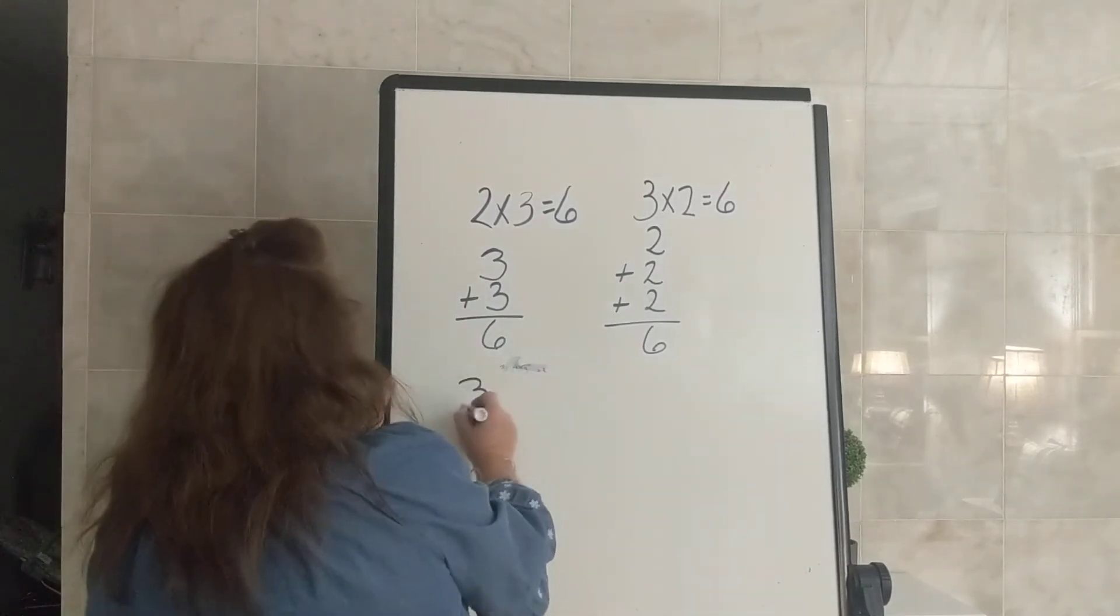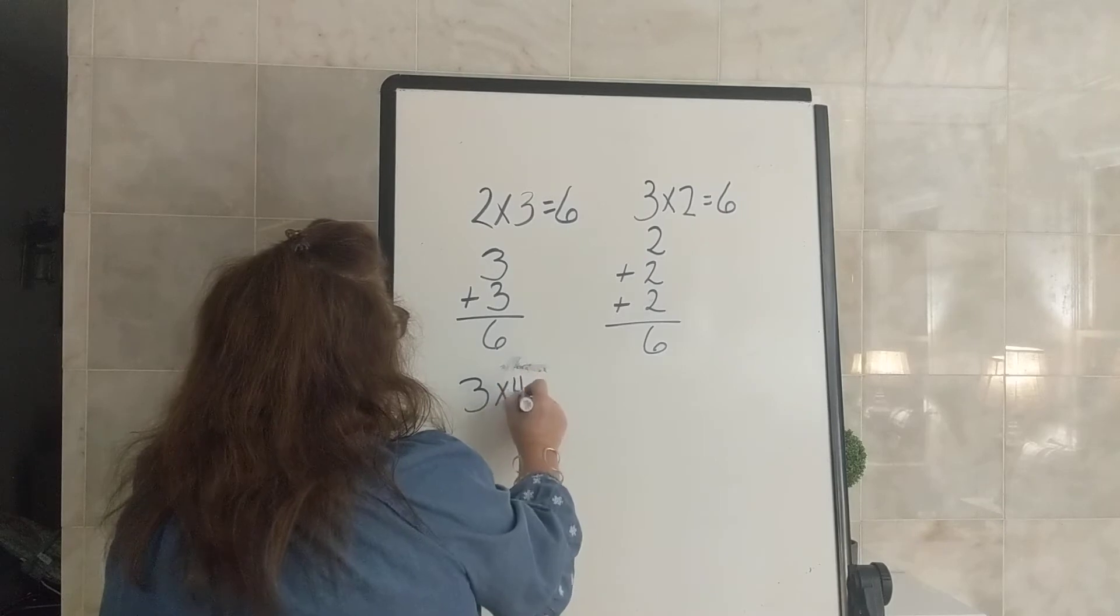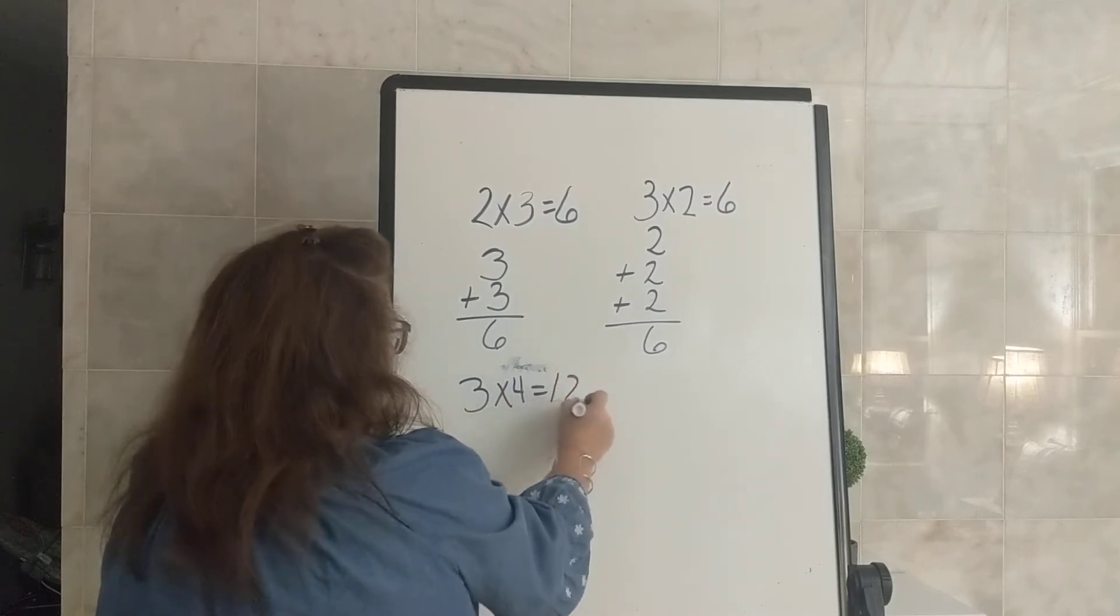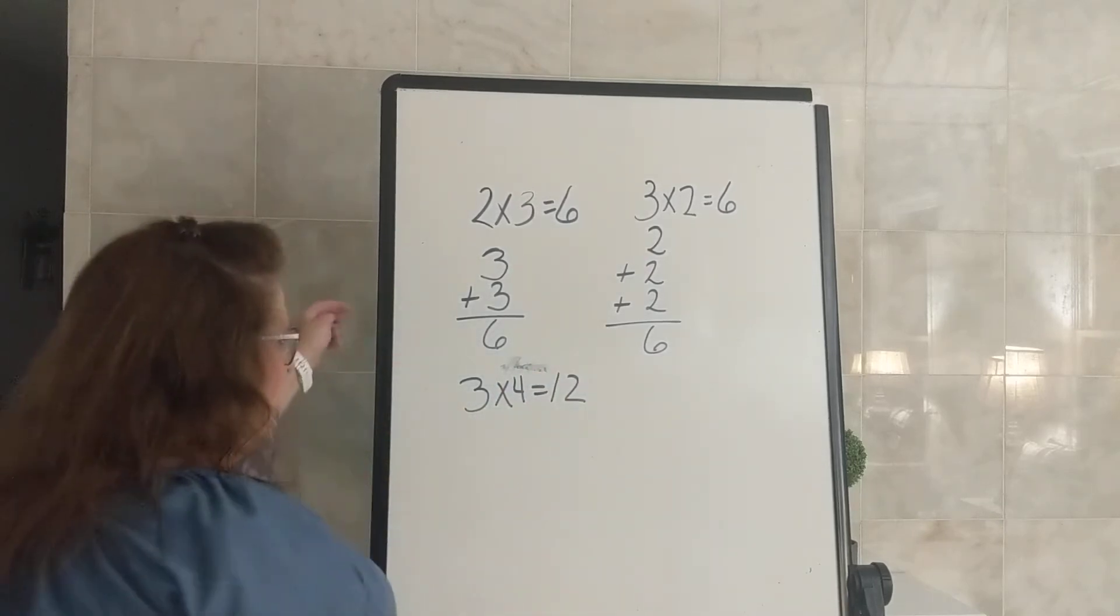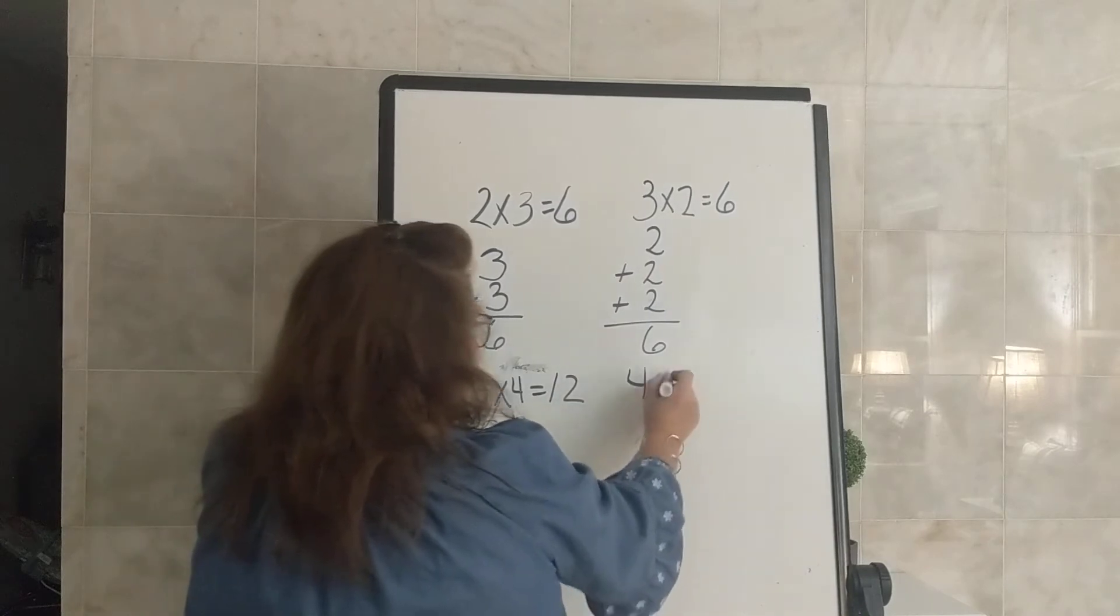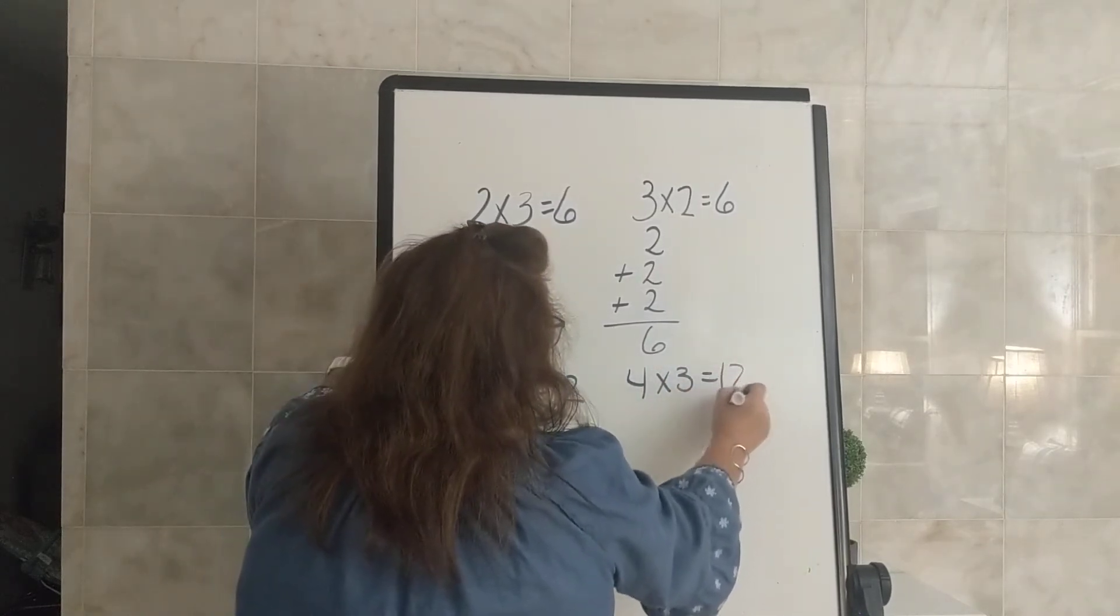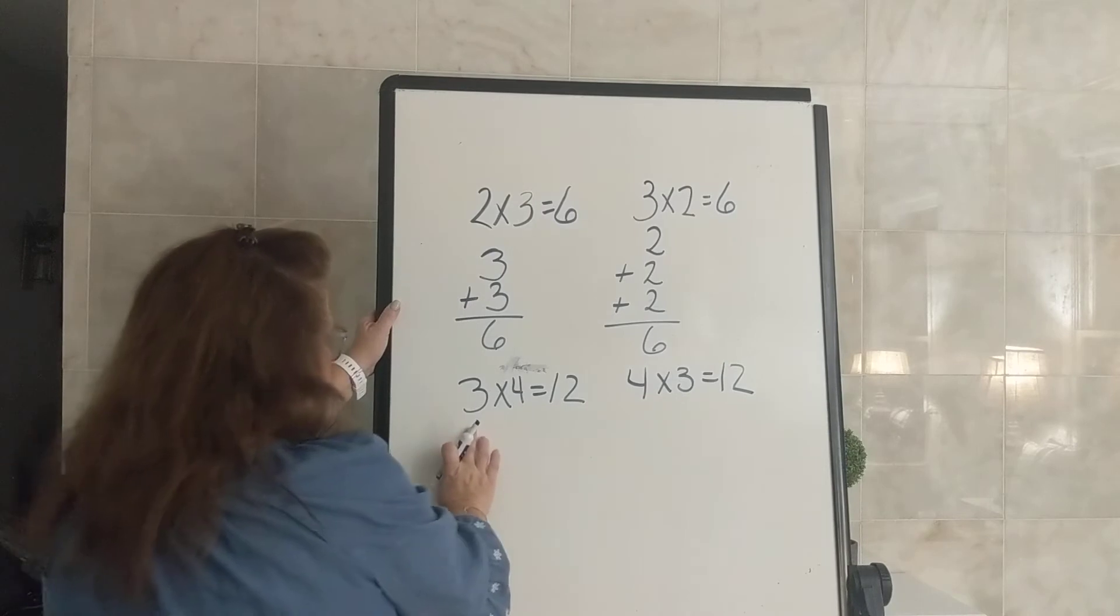Let's do 3 times 4 equals 12. We can switch our factors around and say 4 times 3 equals 12.